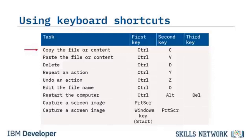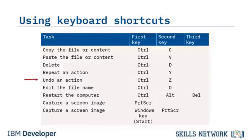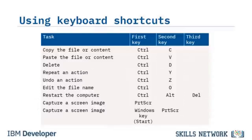To copy, press Ctrl-C. To paste, press Ctrl-V. To delete, press Ctrl-D. To repeat an action such as inserting rows, columns, or words, press Ctrl-Y. To undo, press Ctrl-Z. To edit a file name, press Ctrl-O. To restart the computer, press Ctrl-Alt-Delete. And to capture a screen image, use the Print Screen button (PRTSCR) or the Windows Start key plus Print Screen.